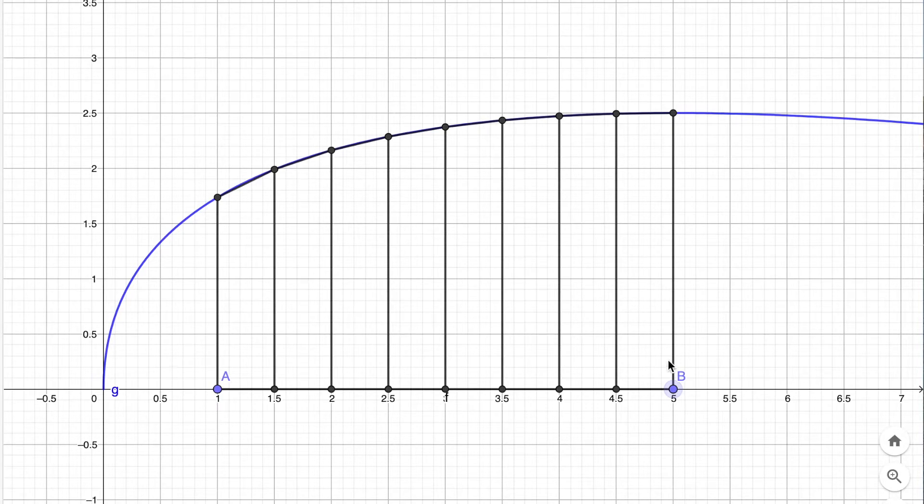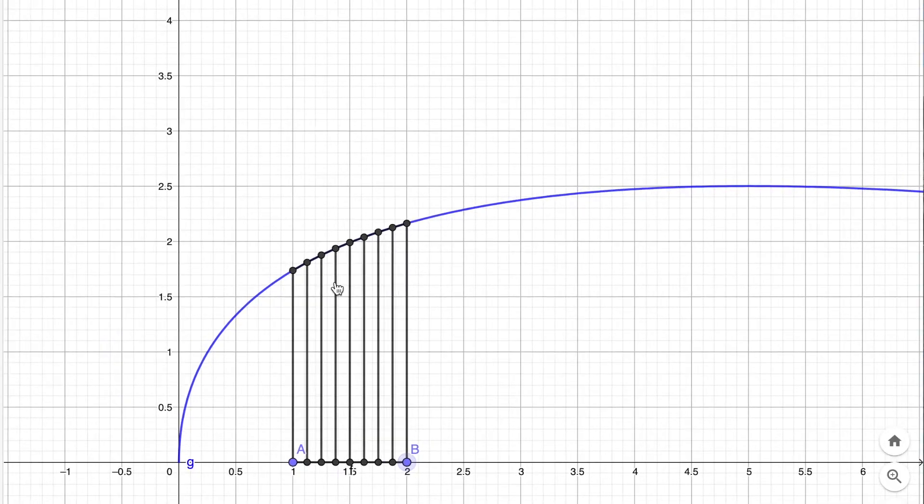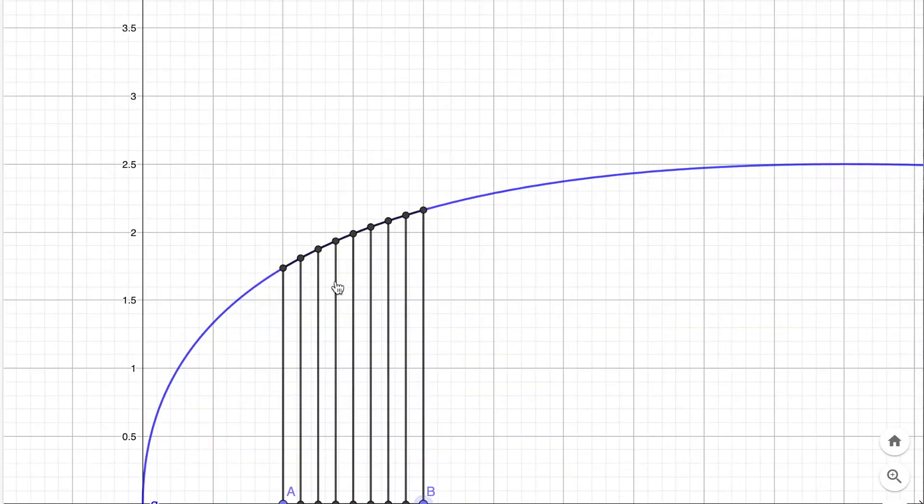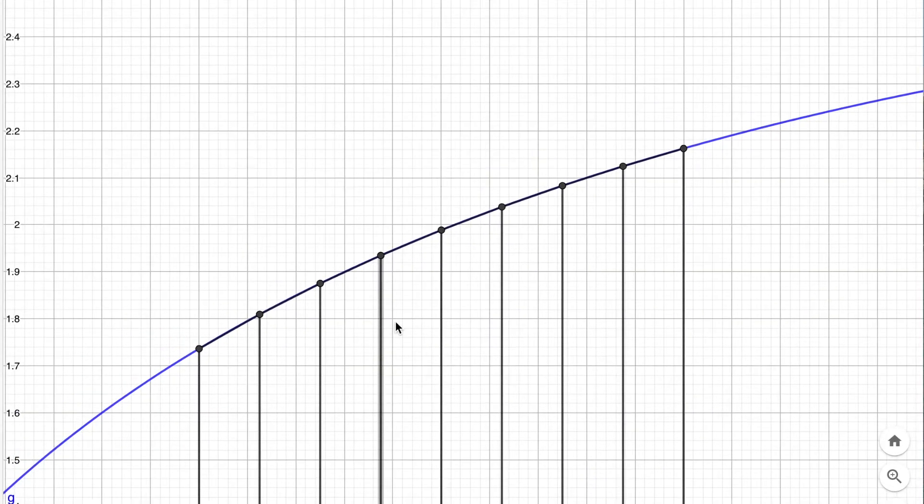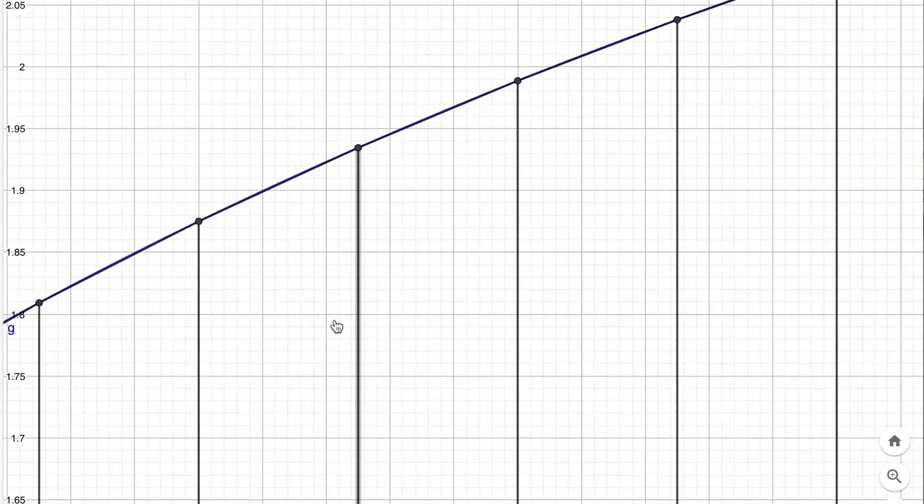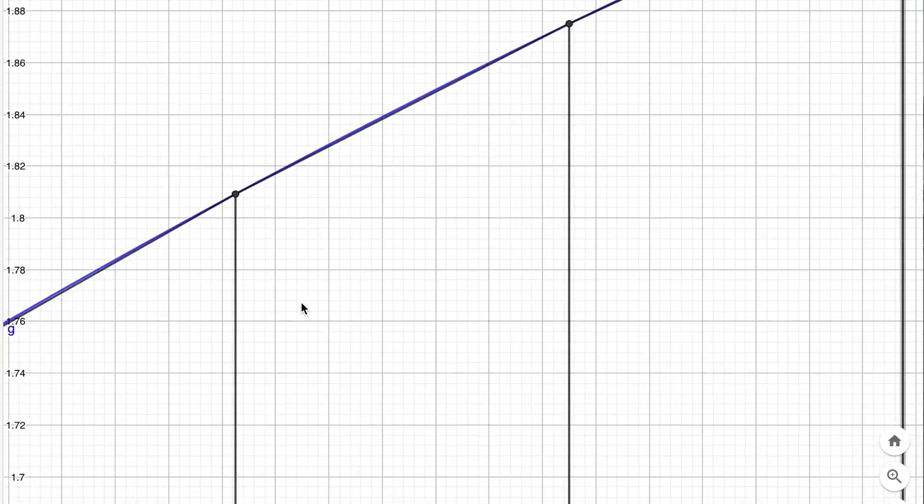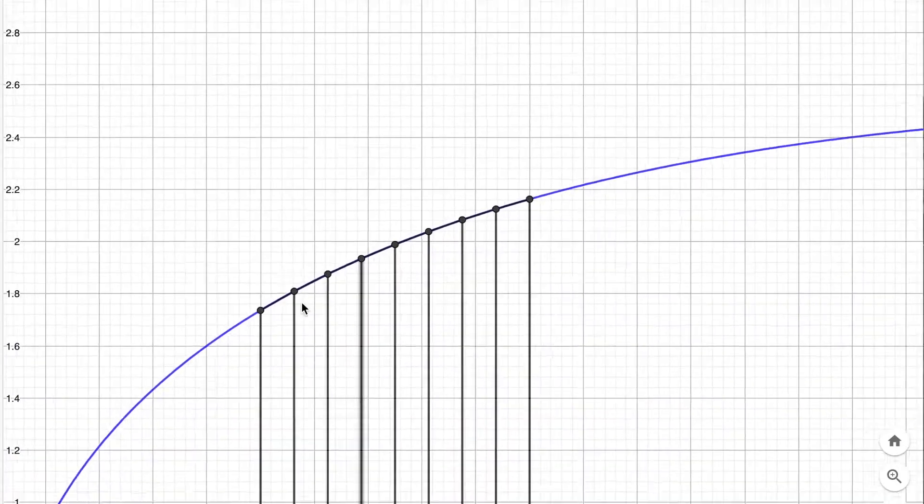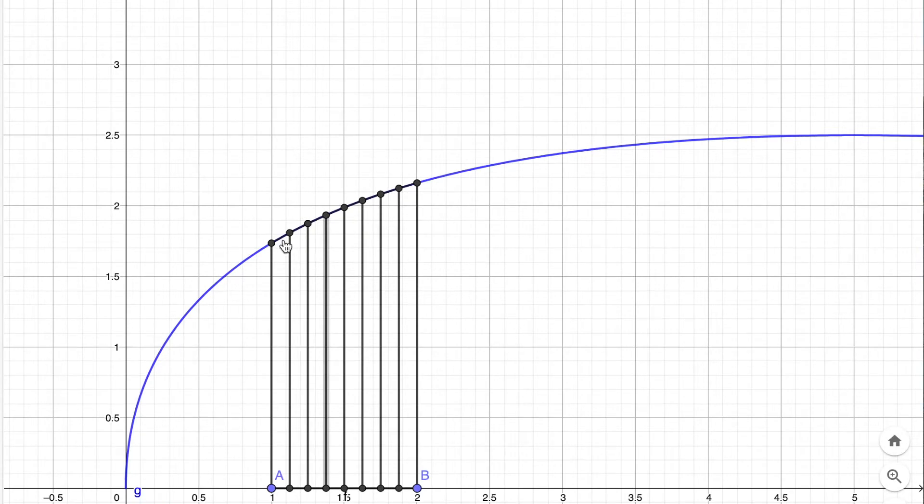One thing we learnt at GCSE was if we had more trapeziums, this would be a better estimate for the curve. Instead, I'm going to have the same amount of trapeziums but over a smaller area. If I do this over just the interval 1 to 2, I have eight trapeziums still, but now I have to zoom in a really long way before I start to see that little bit of light between the curve and the trapeziums. This would be quite a good estimate. If I doubled this to 16, that would be even better.